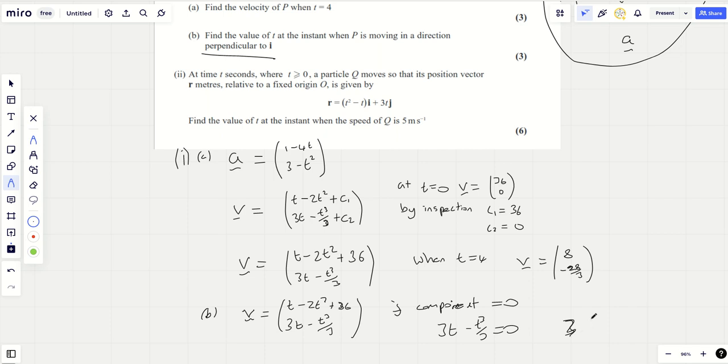So the J component must be zero because it's going directly straight up. It's going parallel to I. And so we're going to get 3T minus T cubed over 3 equals zero. So 3T, well, 9T is T cubed. And so ignoring T equals zero, we get T equals three. Oh, sorry, perpendicular to I. Caught me out. I was reading this as parallel to I. I'm just like everybody else. I rush through questions. I don't read them carefully.